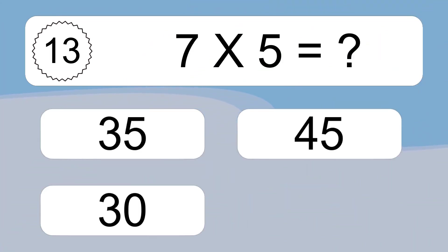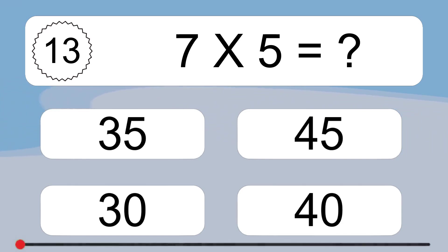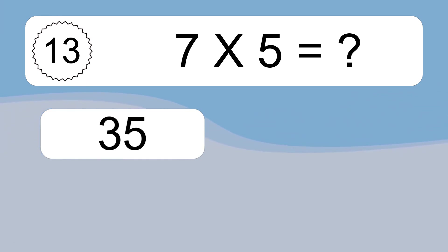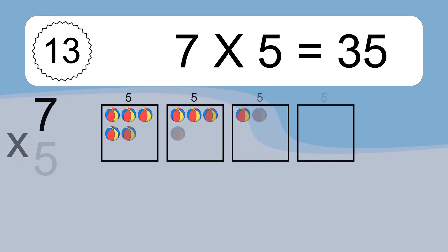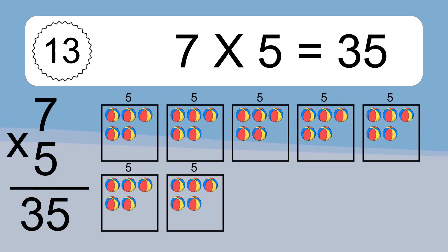7 times 5 equals what? 7 times 5 equals 35. We have 7 boxes, and each box has 5 colorful balls inside. If you count all the balls in all the boxes together, you will have 7 times 5 balls. This equals 35 balls.